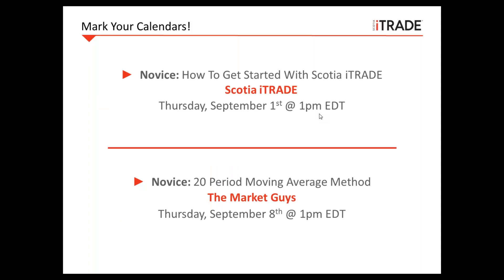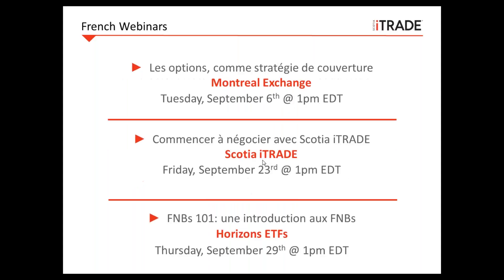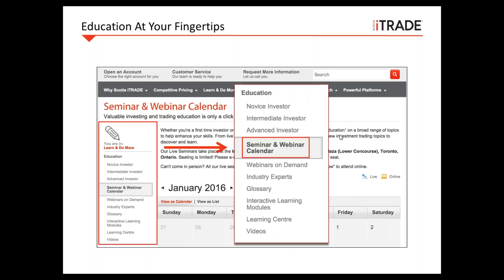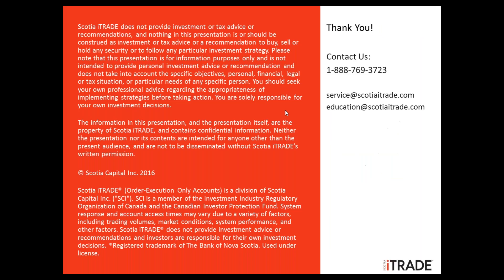Don't forget to mark your calendars. Next Thursday, September 1st at 1 p.m. Eastern Time, we have our How to Get Started with Scotia iTrade webinar, which covers the equity screener AJ mentioned. AJ joins us again on Thursday, September 8th at 1 p.m. Eastern Time to present on the 20-period moving average method. For the first time in a long time, we are offering French webinars — Tuesday, September 6th on Options as a Hedging Strategy by the Montreal Exchange, and Friday September 23rd another How to Get Started with Scotia iTrade session. Thursday September 29th, Horizons ETFs joins us for ETFs 101.